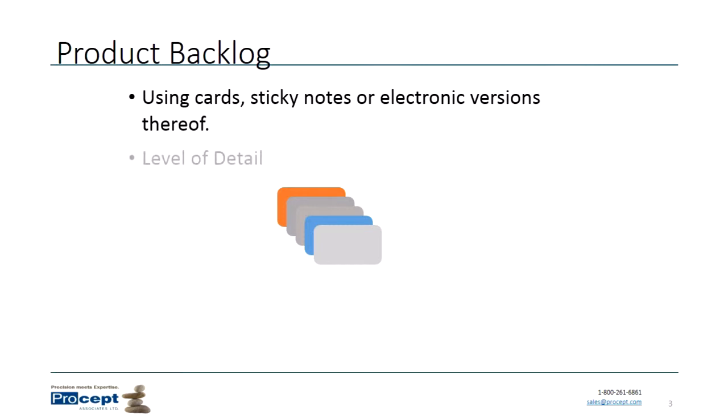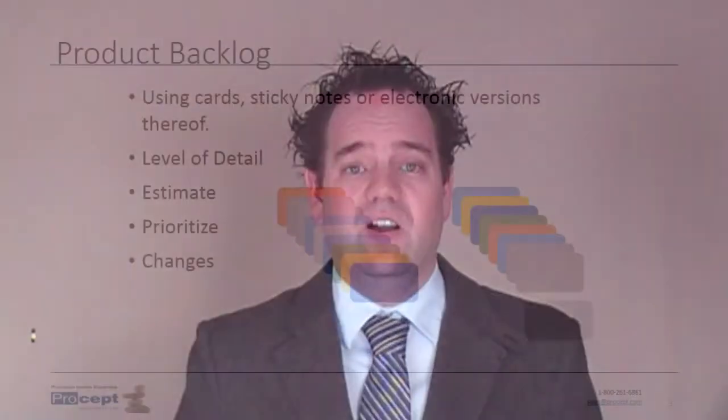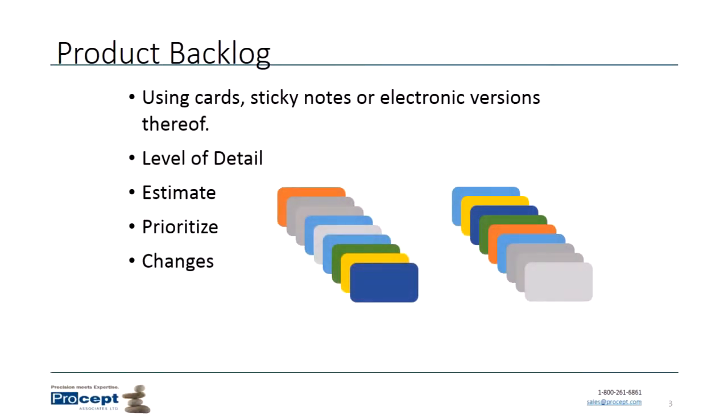When we talk to business analysts about not creating a big document but instead creating these backlog items, the common questions that come up are: what's the correct level of detail that goes on these backlog items? How do we estimate these backlog items? How do we prioritize them? And how do we handle changes to these backlog items? These are the things we're going to talk about in this video.